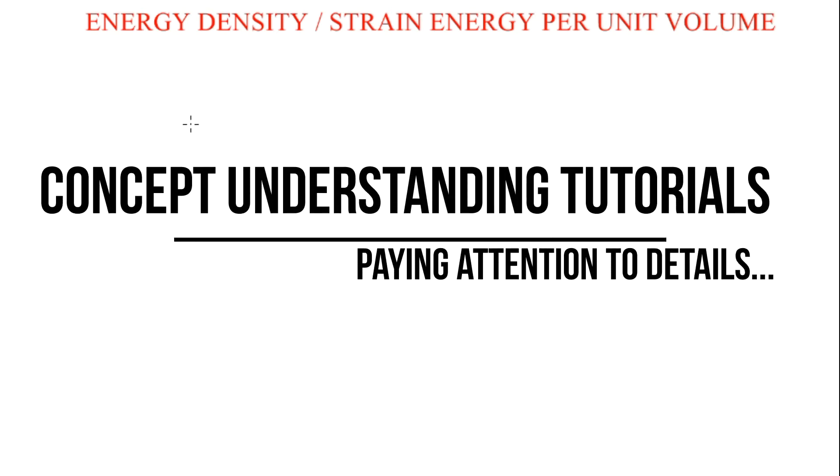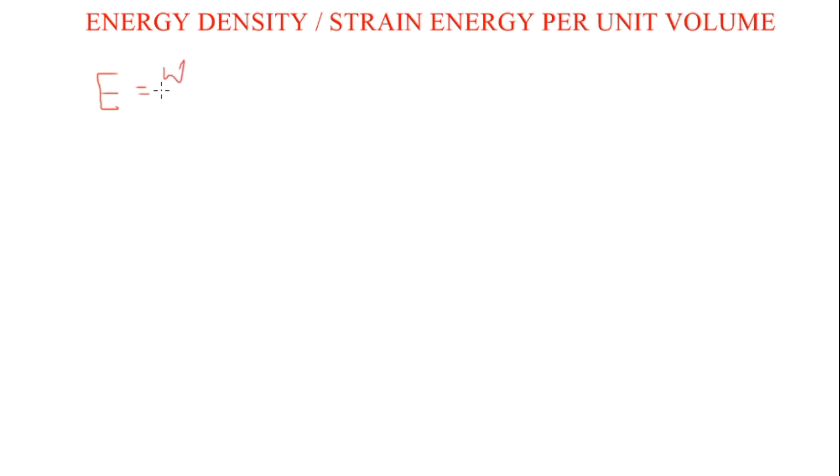Let's talk about the energy density, or the strain energy per unit volume — it is the same as the elastic potential energy per unit volume of a stretched material. The energy stored per unit volume of a stretched wire is given as e, which is the energy density, equal to work done over volume. Work done is measured in joules and volume in cubic meters, so the unit is joules per meter cube.